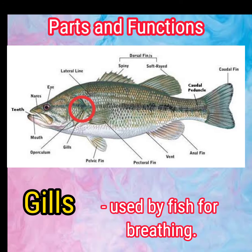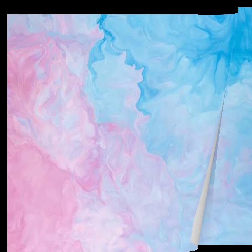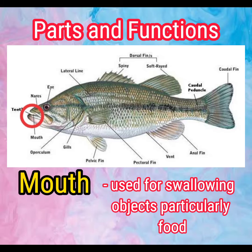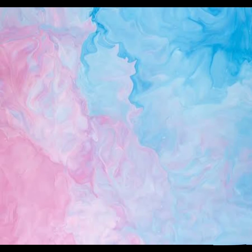Gills. This part helps fish breathe underwater. Upper column has a part of fish that covers the gills. The mat of fish is used for swallowing objects, particularly food.